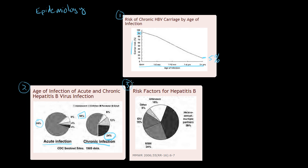This third chart goes over risk factors for hepatitis B. The main risk factor is that it's sexually transmitted, so individuals with multiple sexual partners are at high risk. Intravenous drug use is also a big one. Another big risk factor is the area you come from, as it's endemic in some areas more than others. Let's take a look at a world map.